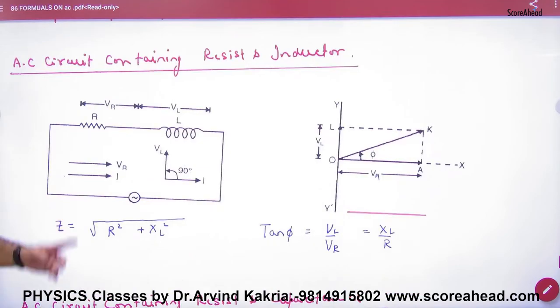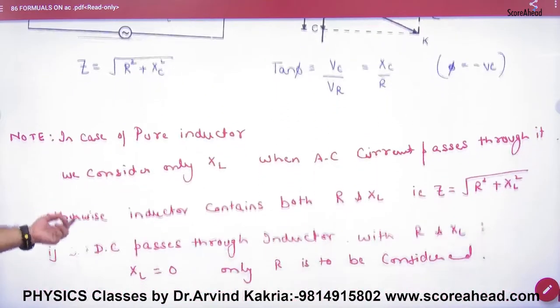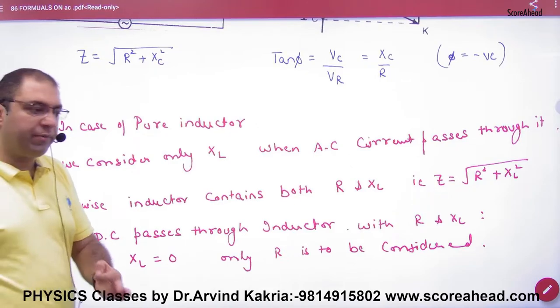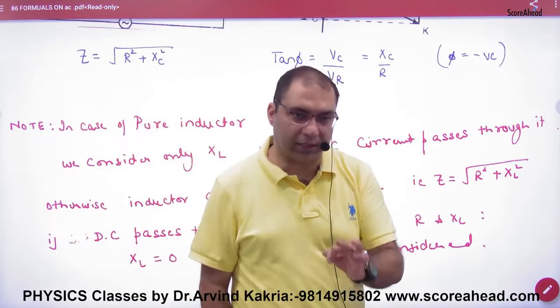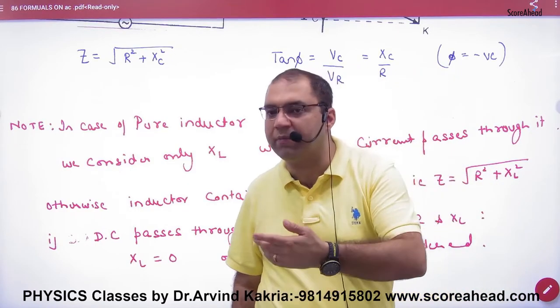AC circuit containing resistance and inductor. I told you that we had to remove capacitor from the inductor. This is a note. In case of a pure inductor, if a numerical has written the word pure inductor, inductor means solenoid. Inductor solenoid is made from wire.